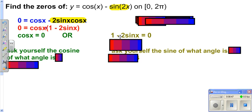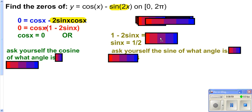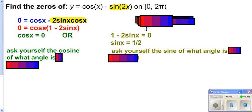Then you want to solve it. Here you have cosine equal to zero. That's solved. Over here, you'd want to subtract one, divide by negative two. And you get your sine to be one half.